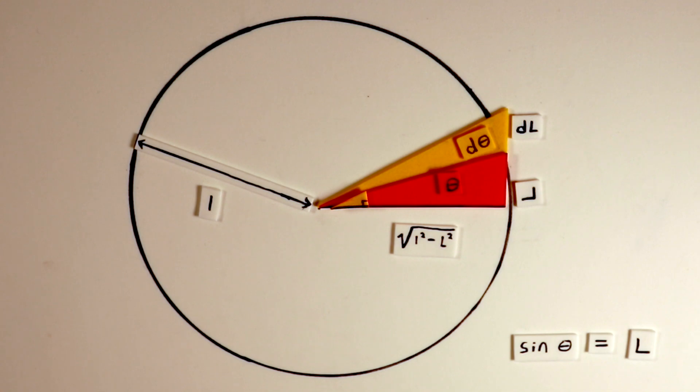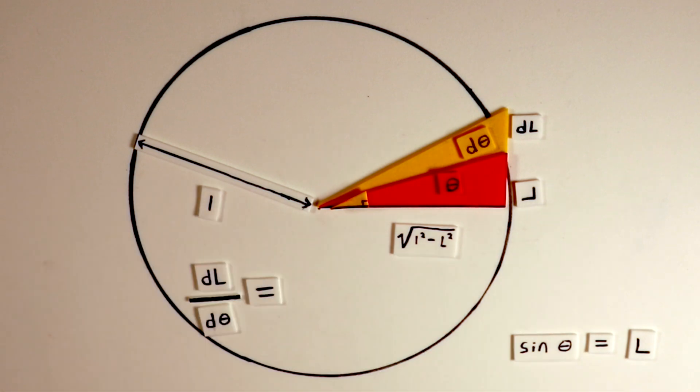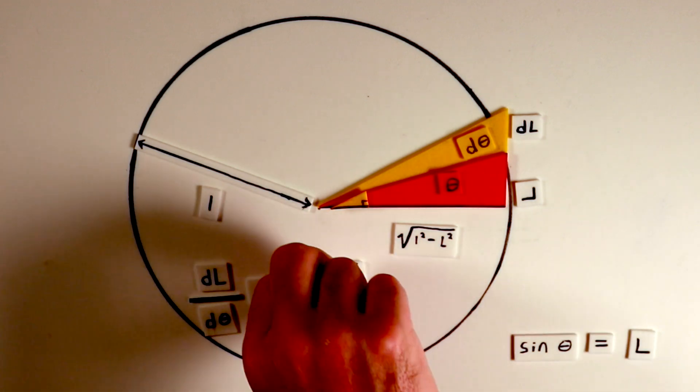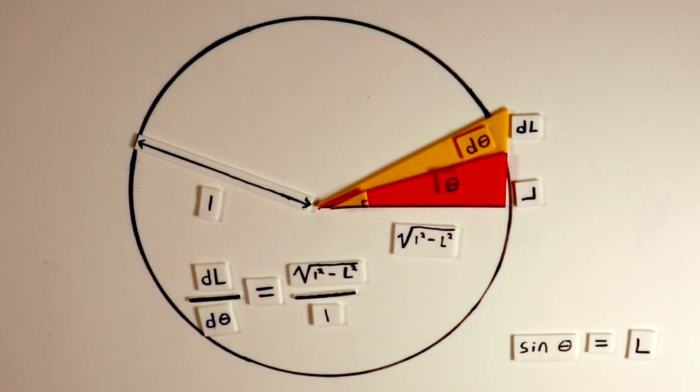Due to the triangle's similarity, we can compare their corresponding sides. The ratio dL to d theta in the small triangle can be equated to the ratio of the corresponding sides in the original triangle. Importantly, thinking of d over d theta as an operator, which operates on L in this case, we can replace the left-hand side of the equation by d over d theta of sine theta.